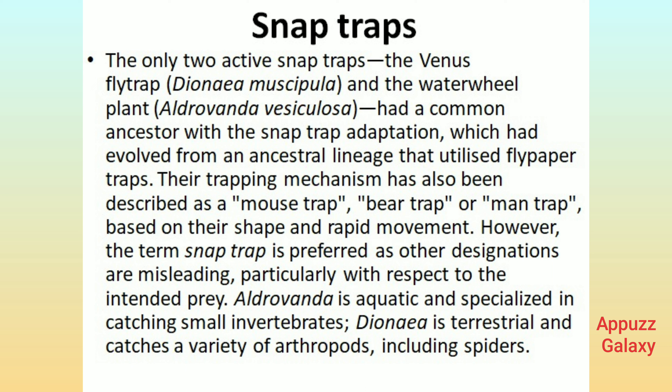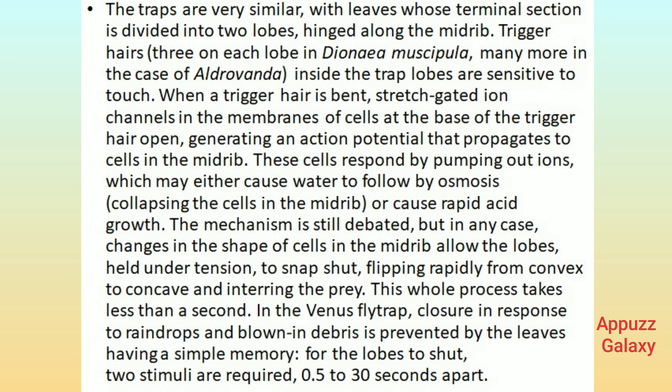Aldrovanda is aquatic and specialized in catching small invertebrates. Dionaea is terrestrial and catches a variety of arthropods, including spiders. The traps are very similar, with leaves whose terminal section is divided into two lobes, hinged along the midrib. Trigger hairs — three on each lobe in Dionaea muscipula, many more in the case of Aldrovanda — inside the trap lobes are sensitive to touch.